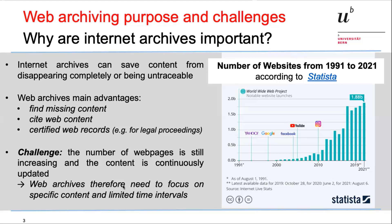The challenge for internet archives is also very obvious: the very large number of web pages. You can see here the development from the beginning of the internet up to now, with the launch of big websites like Yahoo, Google, and Facebook. Nowadays we are at 1.8 billion web pages, so there is no single archive which can store all of that. In addition, this is not static — all these pages are continuously updated, so you have to find useful intervals in order to archive web pages with all the updates.